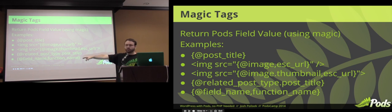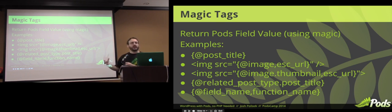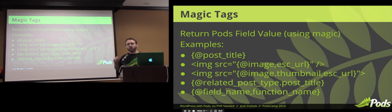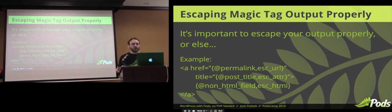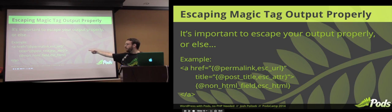We can traverse into relationships. Related post types — the field would be Native Jedi, then dot post_title to get the title of that related item. We can also use the value of the field as the first argument for a function. For example, if you had a field outputting a YouTube link, you could do the field name, then wp_oembed_get, and it will use that WordPress function to embed the media player. It's important to escape properly — always validate data on the way out. You can pass the field value through escape_url, escape_attr, or escape_html. These are built-in WordPress functions for validating data.